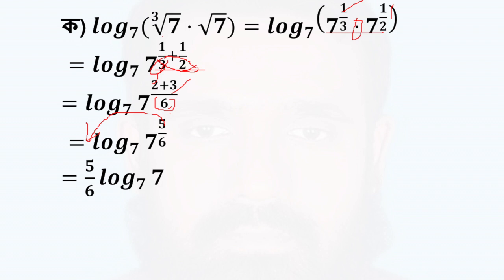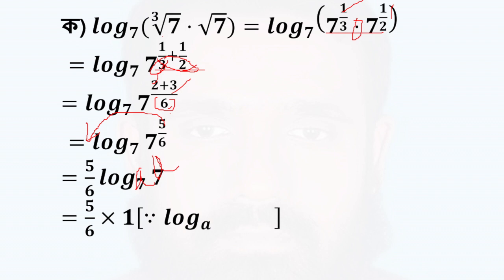So here is log AA. Log AA is equal to 1, and 5 by 6 into 1. A to log AA equal to 1, so A can be minimum 5 by 6.